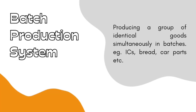The next production type is batch production. You can think of bakery items like bread, or even car parts — they are all batch produced. In batch production, you are producing a group of identical goods simultaneously in batches. Think of a bakery: some customers like puffs, some like pastry, some like cupcakes or donuts — the baker produces these items in groups.